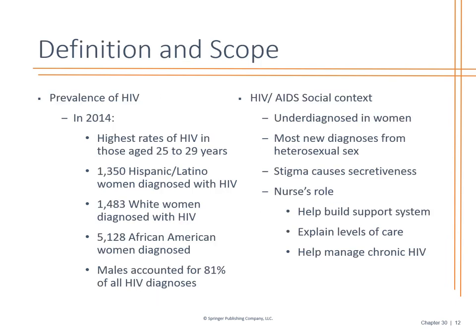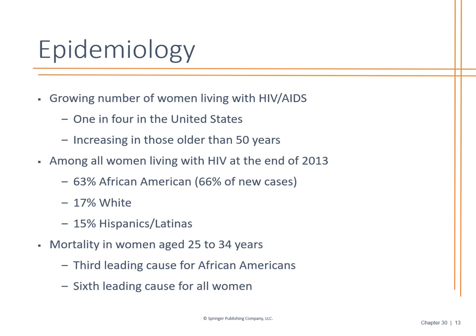The prevalence of HIV has been quite significant and is often undiagnosed in women. The biggest thing you can do is educate and build rapport with the patient so you can help them manage this once past the preventative stage. If they have HIV, be that resource to help them manage it. There are multiple HIV clinics and infectious disease facilities available. One in four women in the US have this, and it is increasing in those over age 50. It is the third leading cause of mortality for African American women — much of this is secondary to health disparities — and the sixth leading cause for all women.